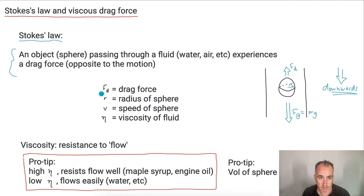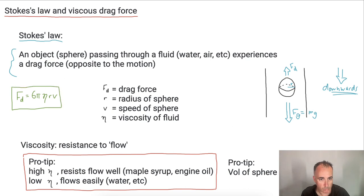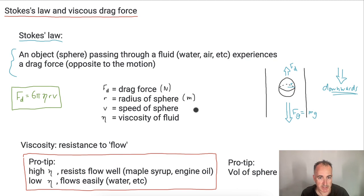Stokes' Law has an equation. The drag force equals 6 times pi times eta times R times V. So Fd = 6πηRV. Fd is the drag force in Newtons — the force that opposes motion. R is the radius of the sphere in meters. V is the speed of the sphere in meters per second.